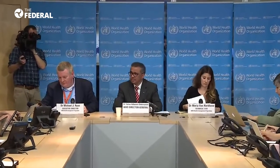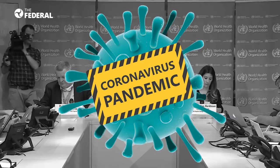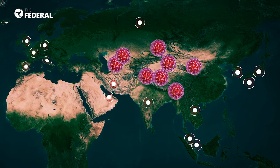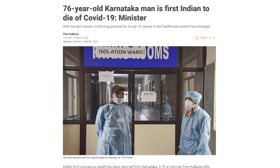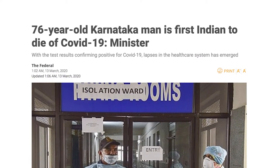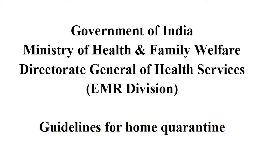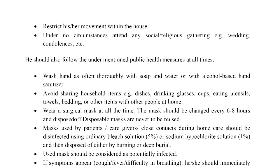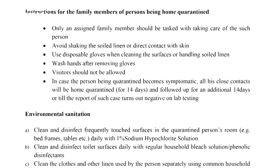The World Health Organization has now declared COVID-19 a pandemic, meaning the worldwide spread of a new disease. While India reported its first coronavirus death on March 12th, it is important for us to understand the guidelines by the Union Health Ministry on home quarantine.